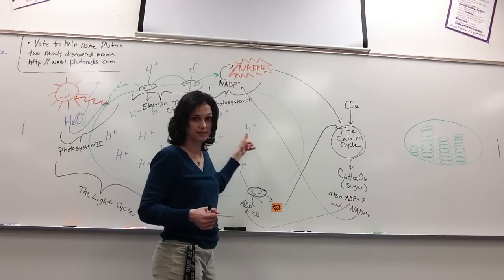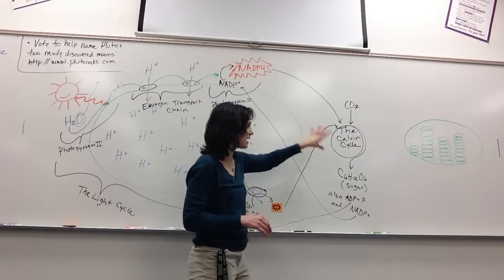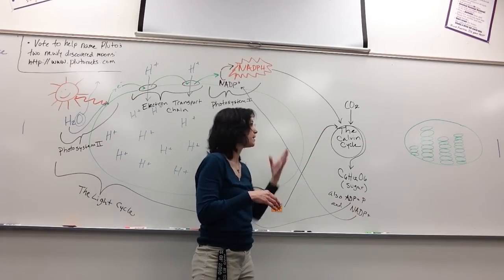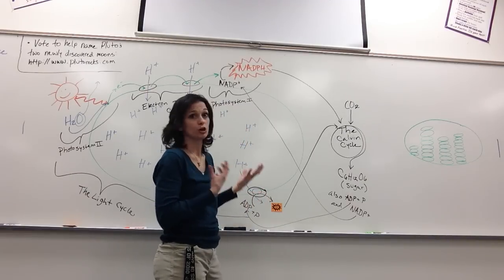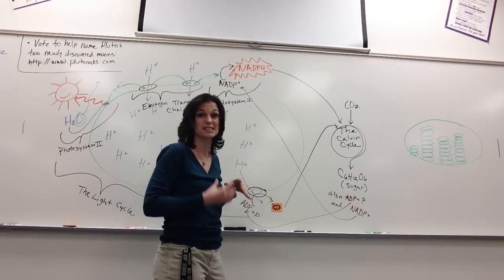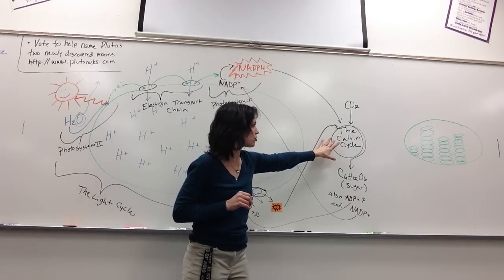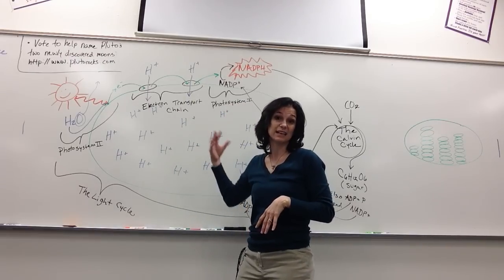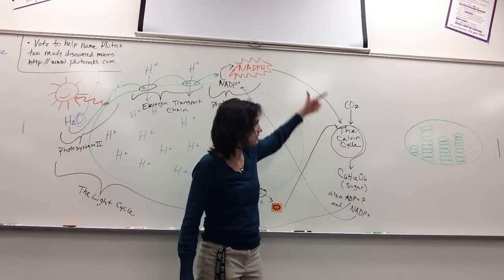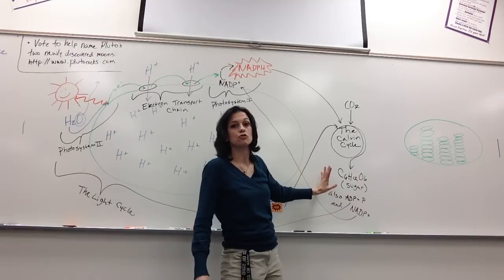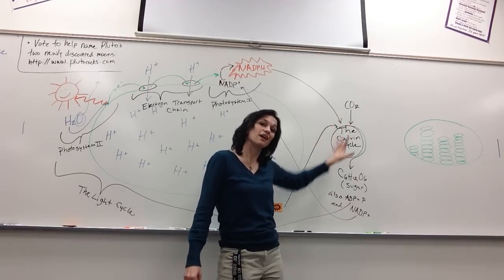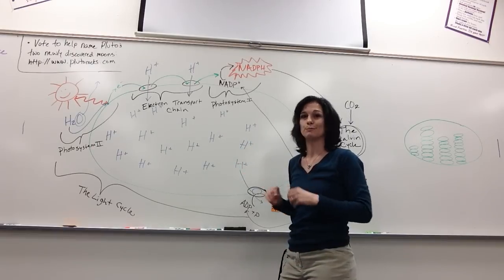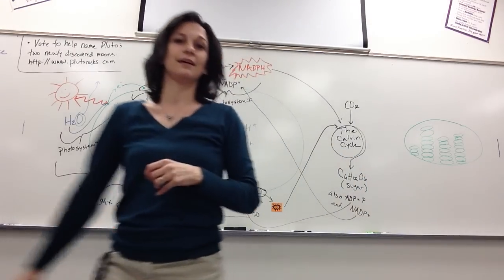Now, sometimes the Calvin cycle is referred to as either the citric acid cycle, because of the chemicals that are in there. It's also sometimes thought of as the dark reactions. Because, sunlight is not required in order to do this portion of it. So, some plants, they can do the light reactions all day long. And, then at night, take that stored up energy, take in some carbon dioxide, and make their sugars. So, these are not light dependent. These are light dependent. Okay, that's the basics of the process. Hope you got it.